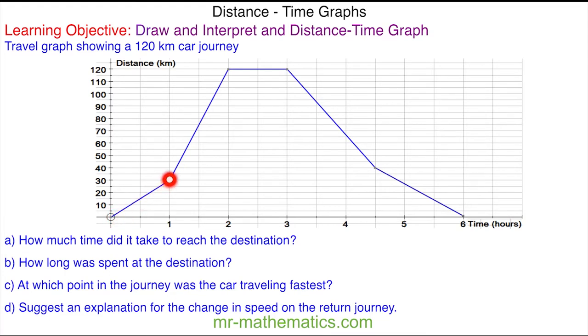As time increases the distance is increasing from home, and at this point the distance from home is constant, which means it has reached its destination. This took two hours. You can see that one hour was spent at the destination because this line here has no change in distance.